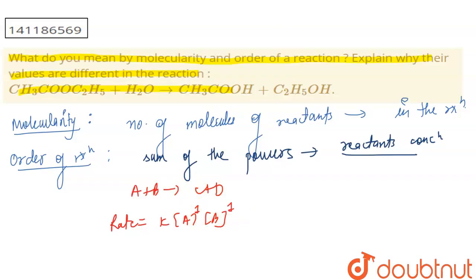Suppose both A and B have order of one. If we sum the order of these two, the total order of the reaction is 2.